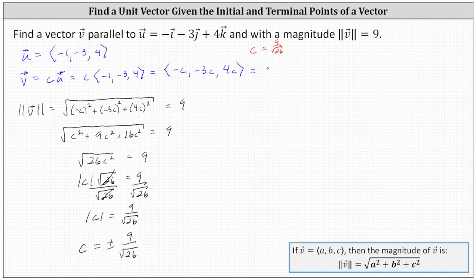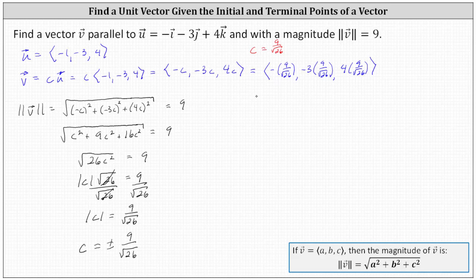Therefore vector v in this case has an x component of negative nine divided by the square root of 26, a y component of negative three times nine divided by the square root of 26. Simplifying, the x component is negative nine divided by the square root of 26, the y component is negative 27 divided by the square root of 26, and the z component is 36 divided by the square root of 26.